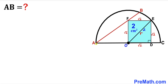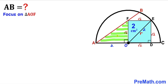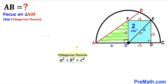We can observe that AO is also the radius of this quarter circle, so AO = 2. Now let's focus on another right triangle AOF, and we'll use the Pythagorean theorem to find length AF. With side c as the hypotenuse, side a = 2 (the radius AO), and side b = √2 (the square side).